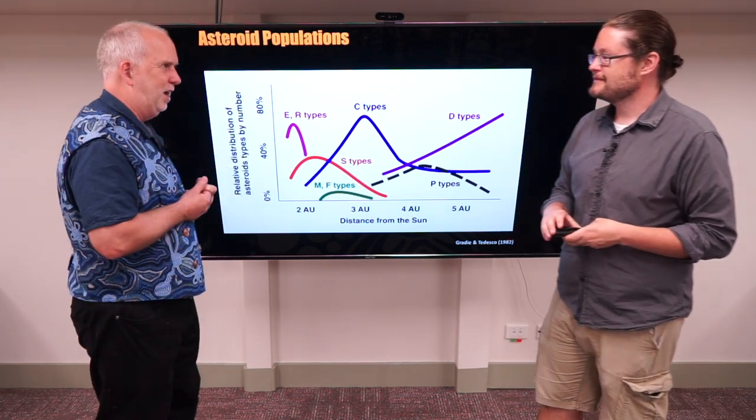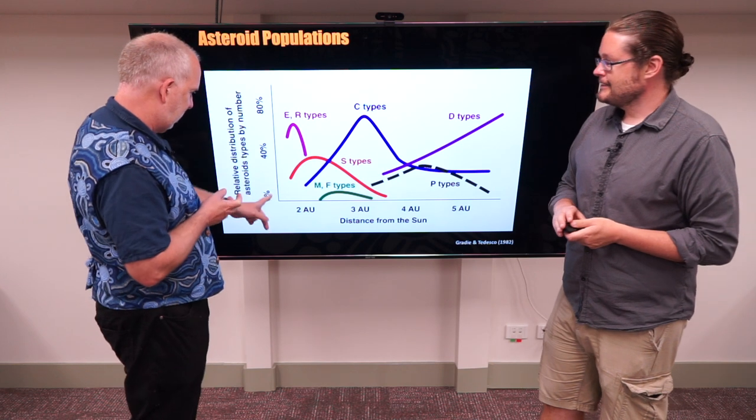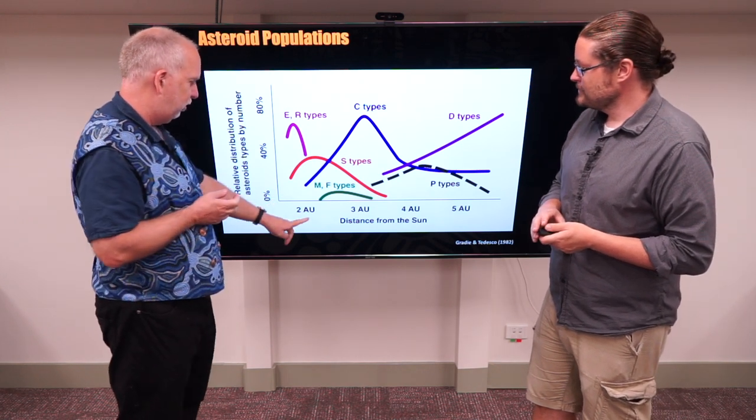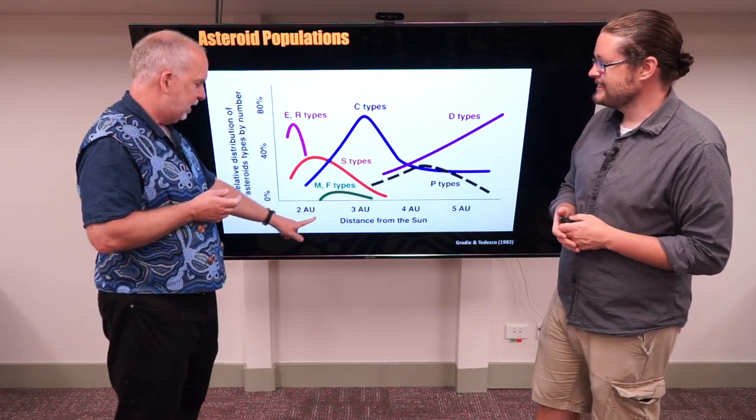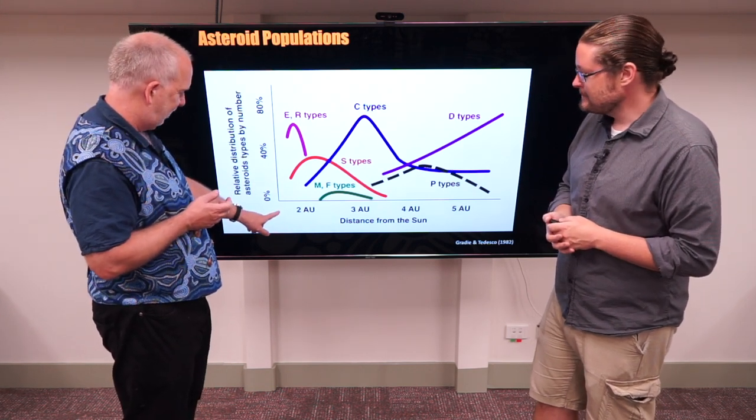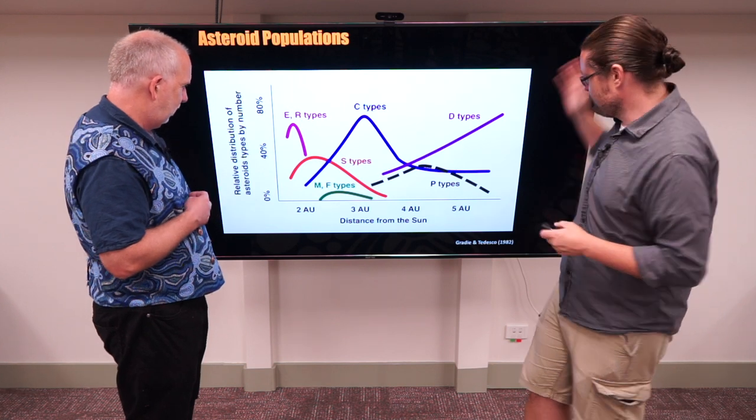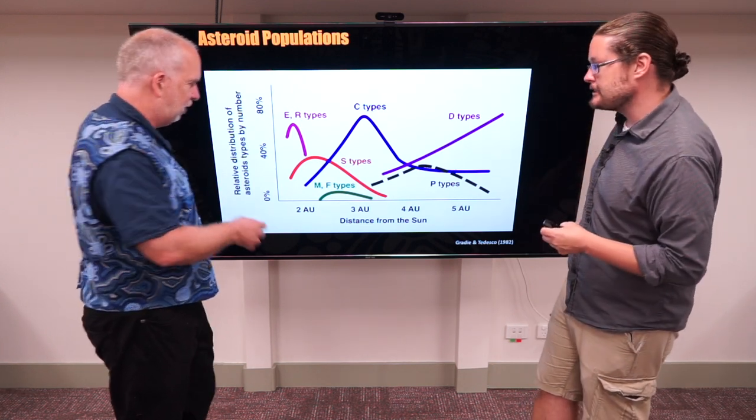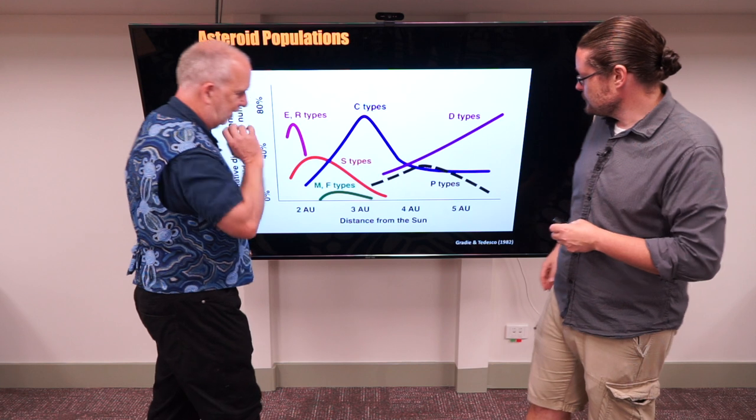So where do we find these different types of asteroids? We've got a diagram here of distance from the Sun. The Earth is by definition 1 AU, astronomical units, so the Earth is about here. Mars is about 1.5, 1.6, so it's around here somewhere. Jupiter's kind of somewhere over here, out at about 5 astronomical units. Saturn's out at 10.